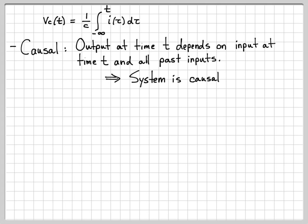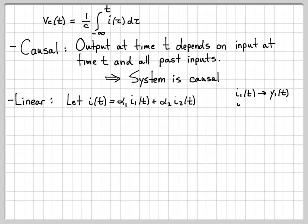What about linearity? For a linear system, superposition must hold. I'm going to pick an input I of T that is a linear combination of i1 of T and i2 of T, where individually putting in i1 gives output y1, and putting in i2 gives output y2. If this is a linear system, given the combined input alpha_1·i1 + alpha_2·i2, what I should get out is alpha_1·y1(t) + alpha_2·y2(t). Let's check if superposition holds.